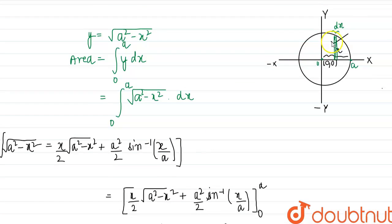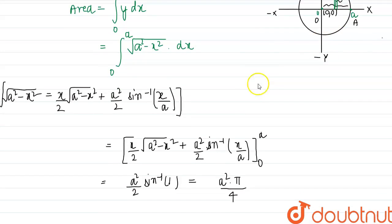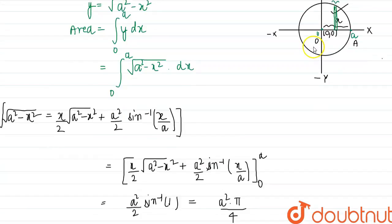So this is the area of this part. We can mark this as AOB. So this is the part AOB. So the whole of this circle will be 4 times AOB.